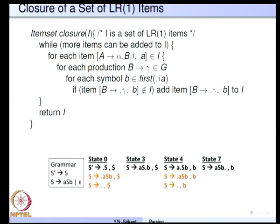To do a bit of recap, we discussed LR1 items and LR1 item construction in the last lecture. We defined two operations: item set closure, which includes all items B going to dot gamma whenever there is an item of the form A going to alpha dot B beta comma A in a certain item set. For example, with S prime going to S and S going to A S B or epsilon, beginning with the initial item S prime going to dot S comma dollar, because of this S we add S going to dot A S B comma dollar, and then S going to dot comma dollar.